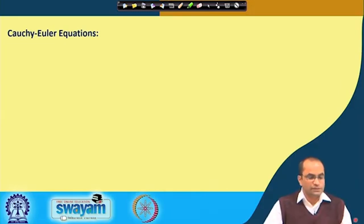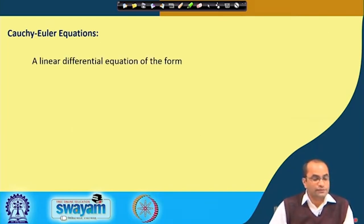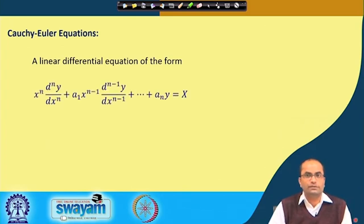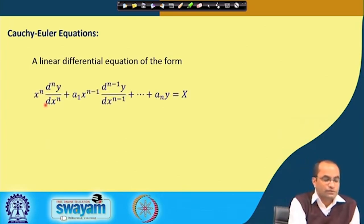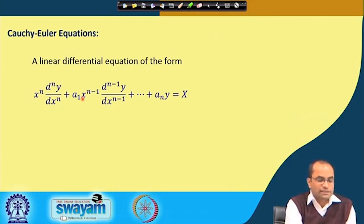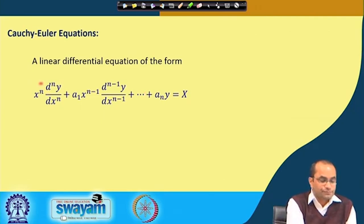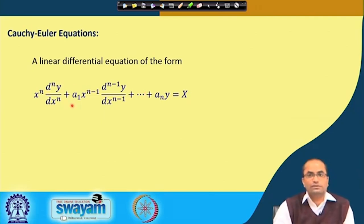Cauchy-Euler equations are equations with non-constant coefficients. So far we have learnt linear differential equations with constant coefficients. This is one special kind of equation with non-constant coefficients. Here we see x^n is coming, then x^(n-1) with the (n-1)th derivative and so on. We will consider this equation which has these non-constant coefficients.